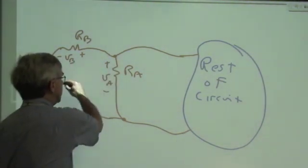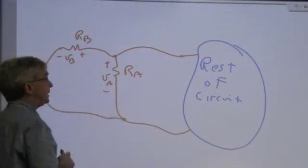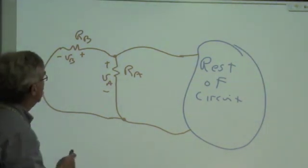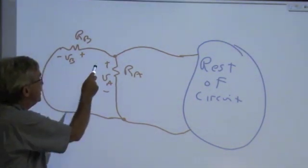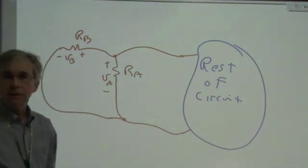I can make a loop about this, which only contains RA and RB, and by Kirchhoff's voltage law, minus VB plus VA is equal to zero.